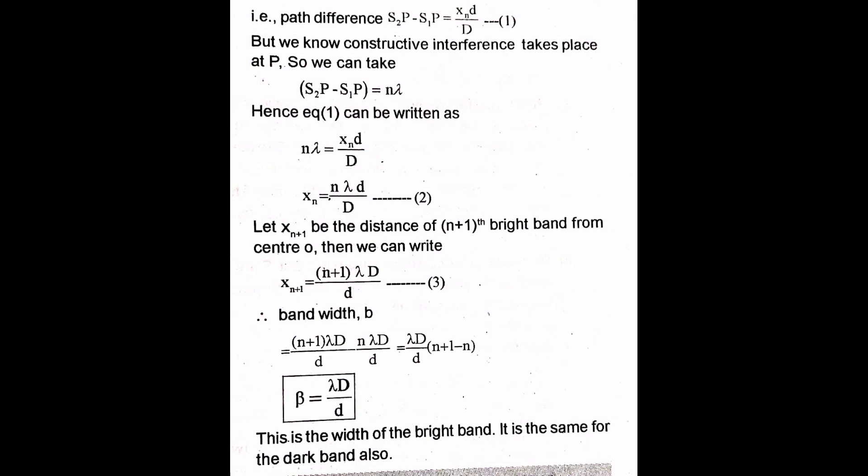Suppose P is the point where constructive interference takes place, so the path difference must be an integral multiple of wavelength: S₂P − S₁P = nλ. Setting xₙd/D = nλ gives xₙ = nλD/d.